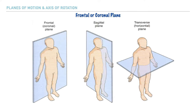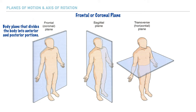First, we have the frontal plane, which is oftentimes referred to as the coronal plane. This plane of motion divides the body into an anterior portion, referring to the front of the body, and a posterior portion, referring to the back of the body, and we can label these areas too.